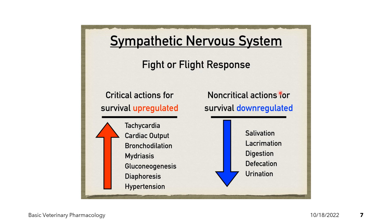The sympathetic nervous system has a negative effect on non-critical actions of the body — those not important for survival. These include salivation, lacrimation, and digestion. During an emergency response, the body tends to down-regulate digestion, defecation, and urination.